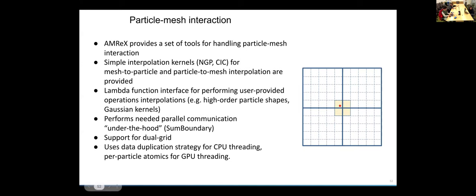When we're implementing the particle-mesh operations, we use the data duplication strategy when we're running on CPUs because atomics are particularly expensive there. But when running on GPUs, the modern ones like the A100s from NVIDIA, the Mi250X from AMD, actually have very fast hardware support for atomic operations. So we're using atomics per particle to do the particle-mesh interpolation there and it performs pretty well.